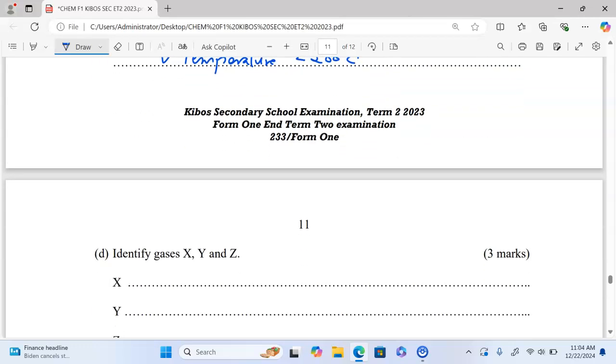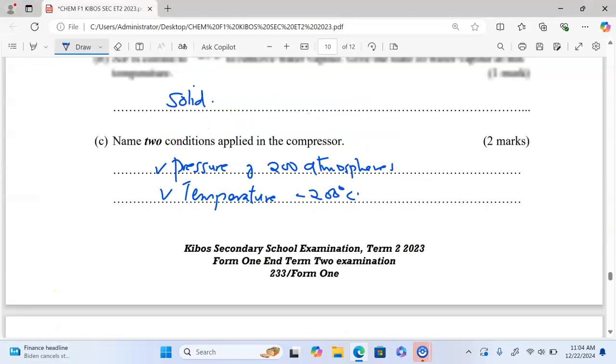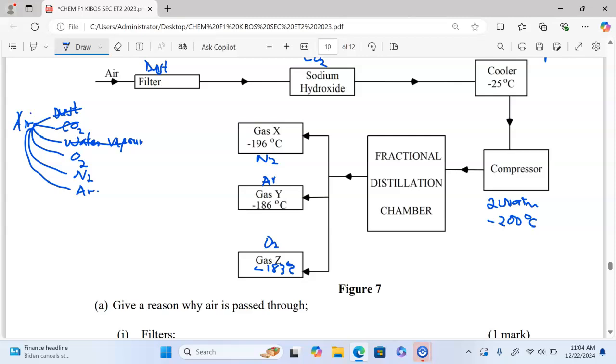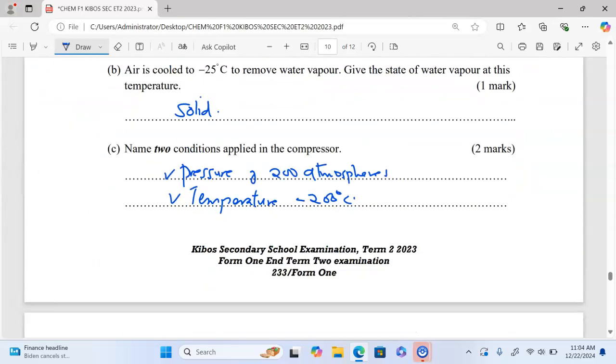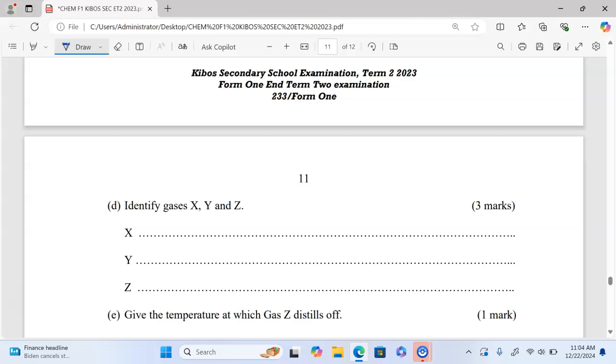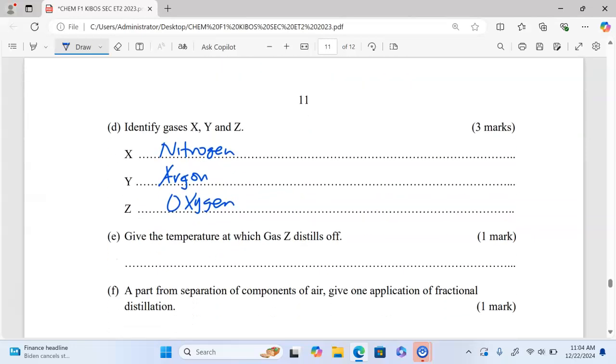Part D: Identify the gases X, Y, and Z. We can go to the flowchart and point out those. If you look at the flowchart, we have gas X which is nitrogen, Y is argon, and lastly Z is oxygen. X is nitrogen, Y is argon which is a noble gas, then lastly we have oxygen, which distills out as the last fraction. The temperature at which gas Z distills off—gas Z is oxygen—and oxygen distills off at negative 183 degrees Celsius.